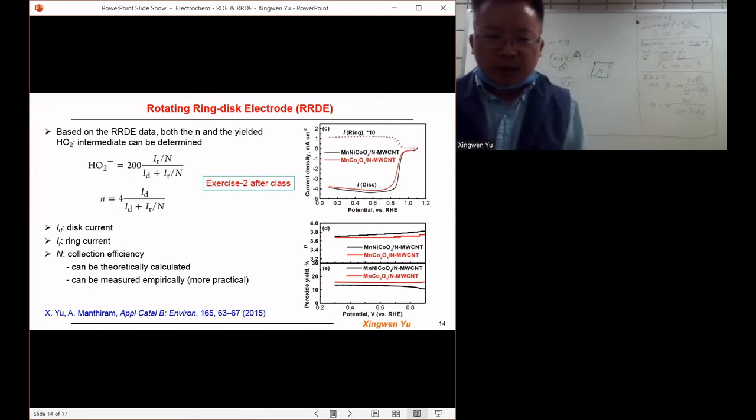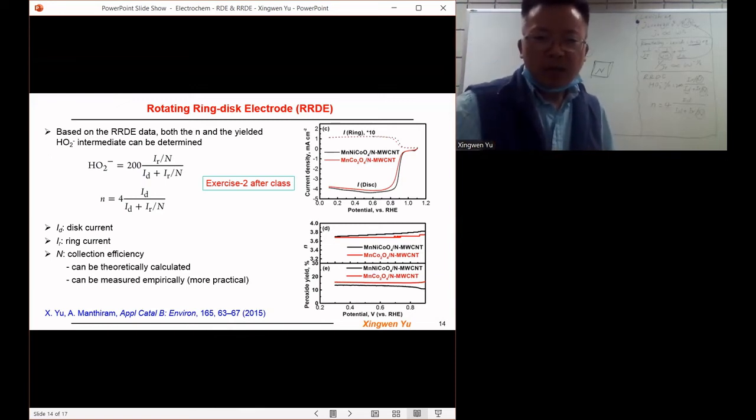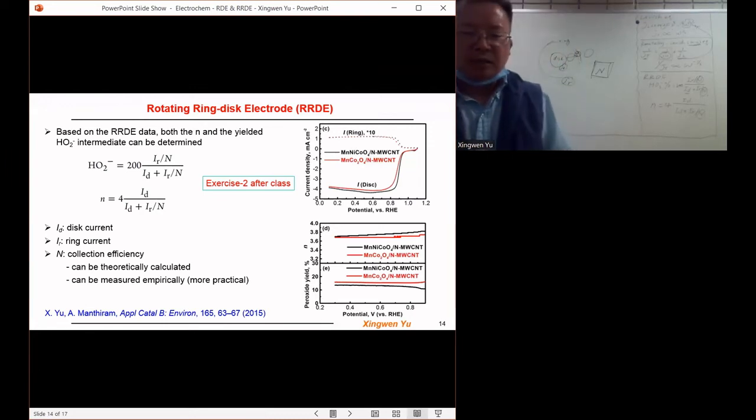Because the ring current is usually much smaller than the disk current. So when I plot this figure, I multiply the ring current by 10 times. Otherwise, it will be a straight line and we won't be able to see any difference.